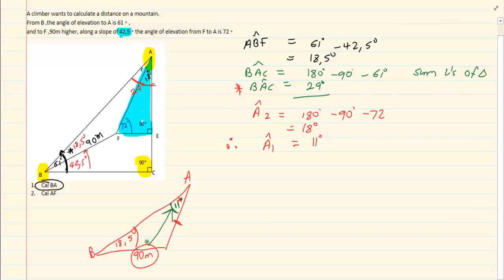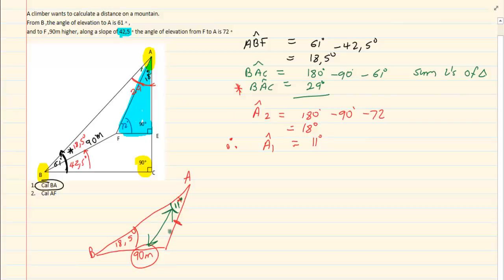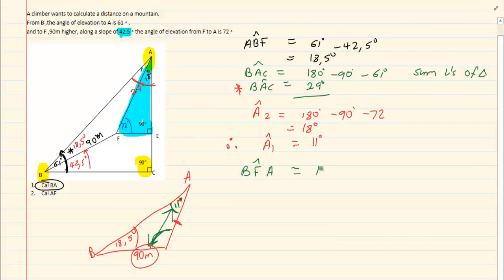Now we have a set. Go over your grade 11 triangle work before attempting this — it is much easier once you have a set, because we know we are using the sin rule. We have one angle of 18.5 and another of 11, so angle BFA is going to equal 180 degrees minus 18.5 minus 11, which equals 150.5 degrees.